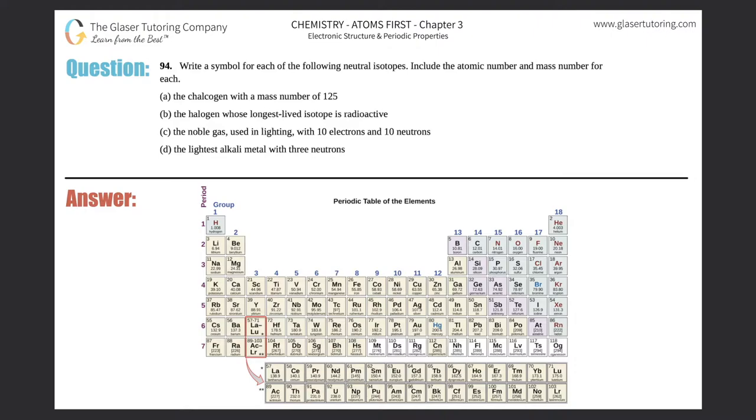Number 94: Write a symbol for each of the following neutral isotopes. Include the atomic number and mass number for each. I have parts a through d, so I'm going to write over here on the left hand side a, b, c, and d.